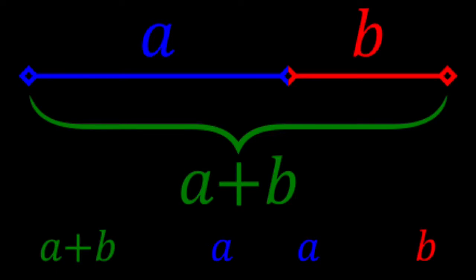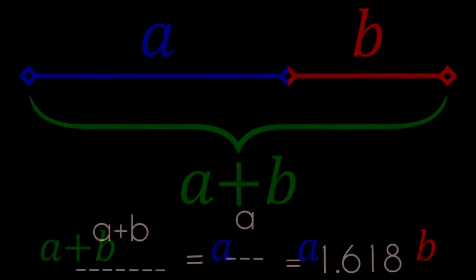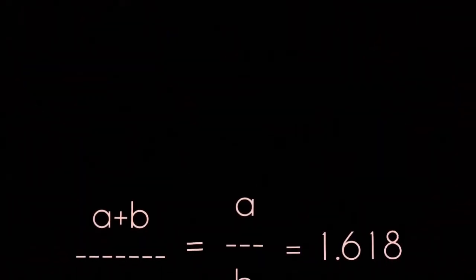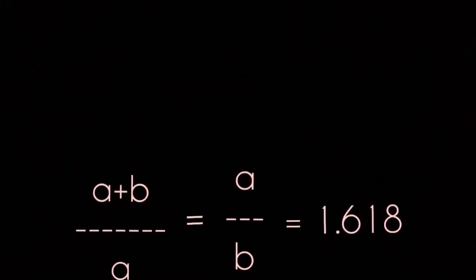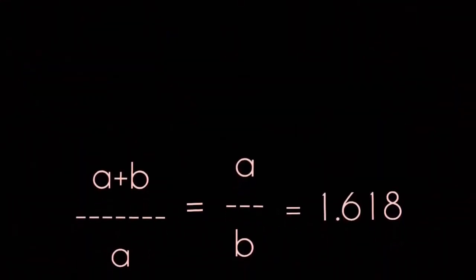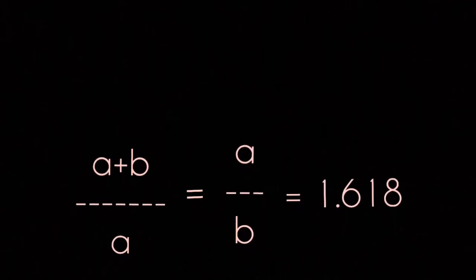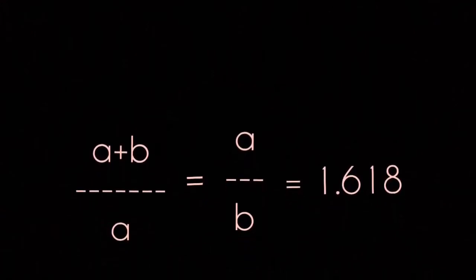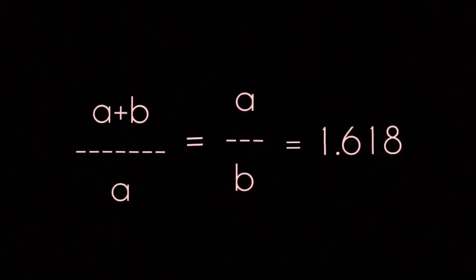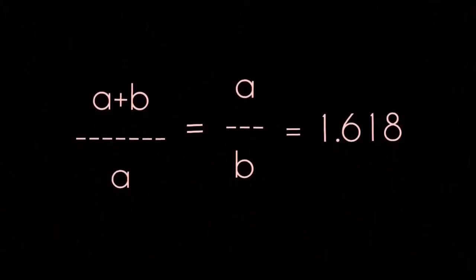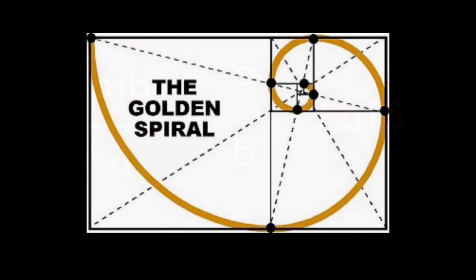Let's say it's divided into parts A and B. When the Golden Ratio is done correctly, the whole length divided by the long part A should equal the long part A divided by the short part B. Meaning, A plus B over A should equal A over B, and they should all equal 1.62. With this, the Golden Spiral was created.